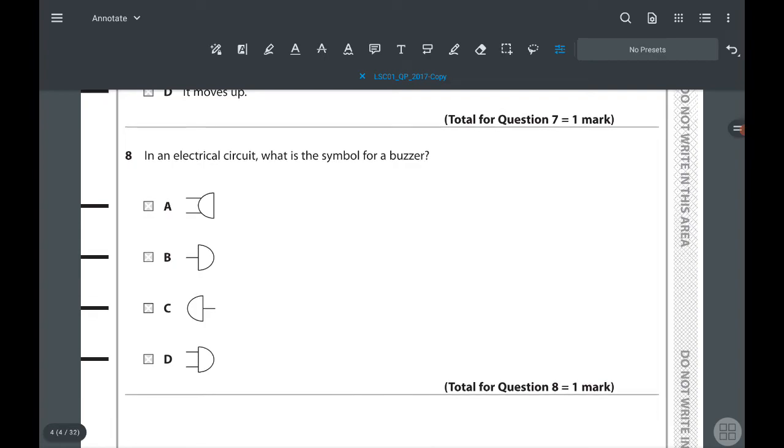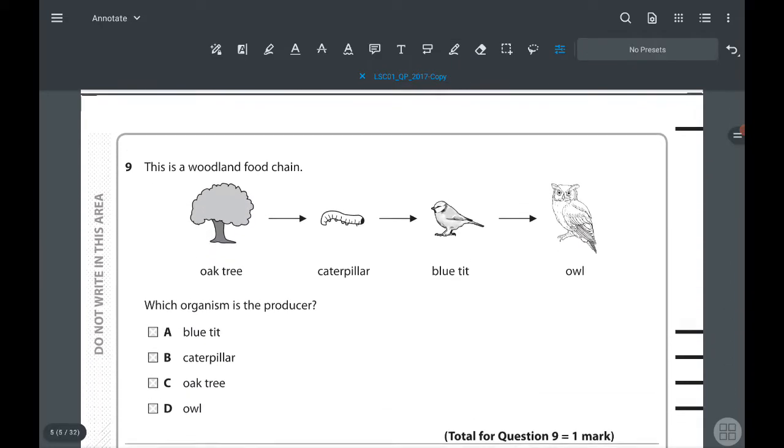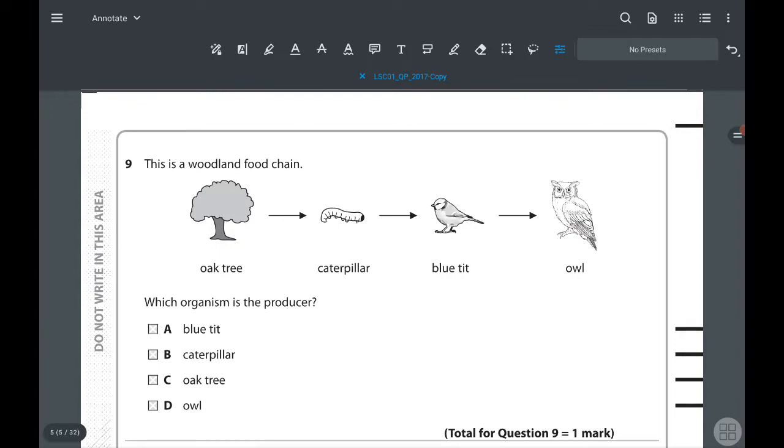Eighth question: in an electrical circuit, what is the symbol for a buzzer? The buzzer symbol is given as diagram A. Ninth question: this is a woodland food chain. Which organism is the producer? A producer creates glucose or food at the beginning. That is the oak tree. We know the plant will be the producer most of the time.